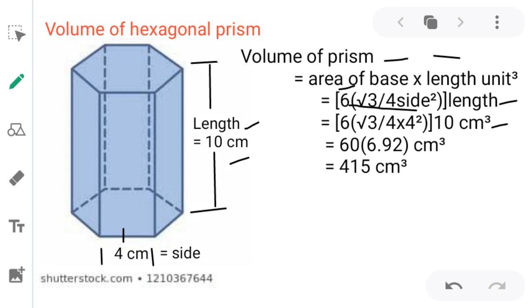By simplifying, the 4 in the denominator is cancelled with the power. So we get 6 times √3 times 10 times 4. Finally we get 415 centimeters cubed as the volume of the hexagonal prism.